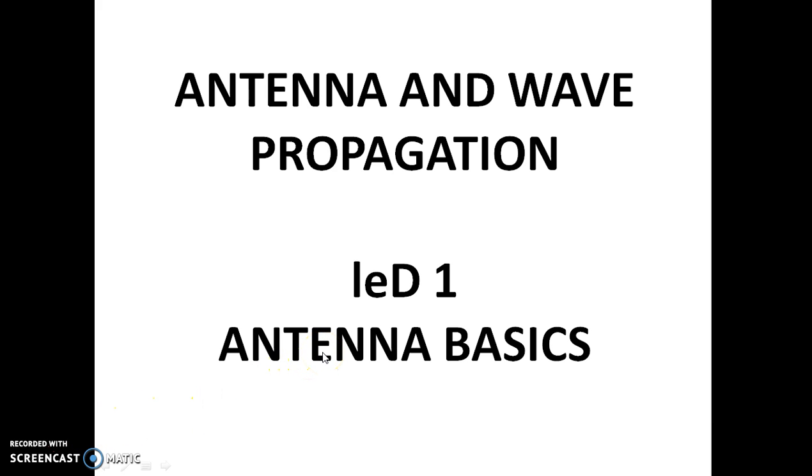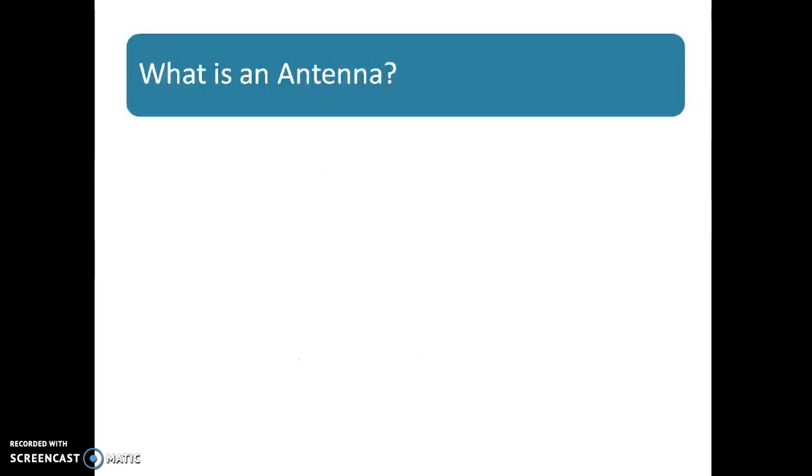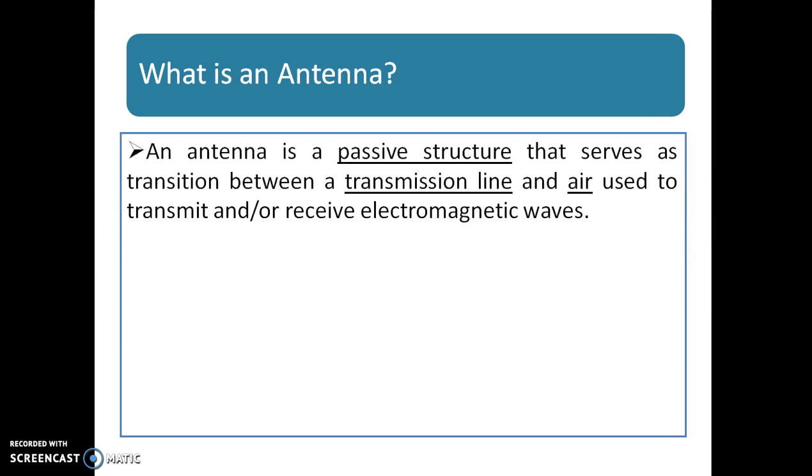Okay, so let's have a look at what is an antenna in my view. Formally, an antenna is a passive structure that serves as transition between a transmission line and air used to transmit or receive electromagnetic waves. It converts electrons to photons where the electrons are traveling in transmission line, and when released from the antenna, the energy has been converted from electronic energy to photons of electromagnetic energy which are radiated in the wireless space.